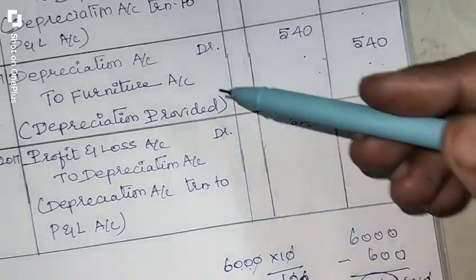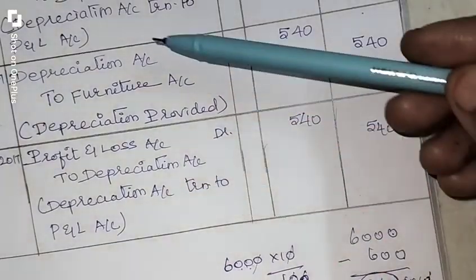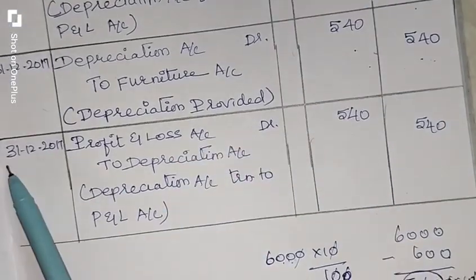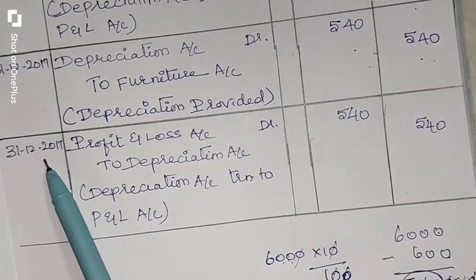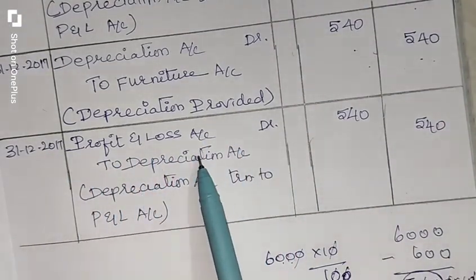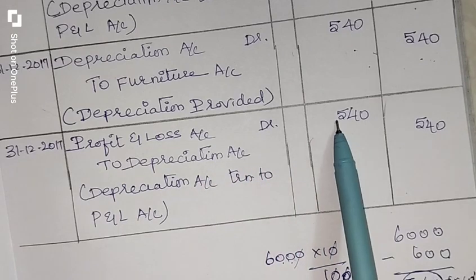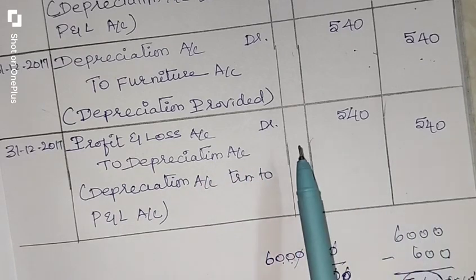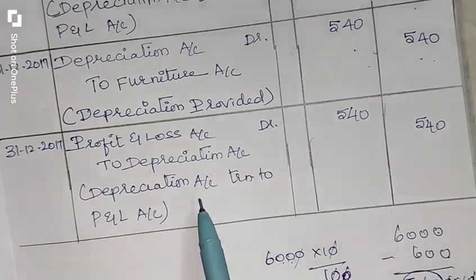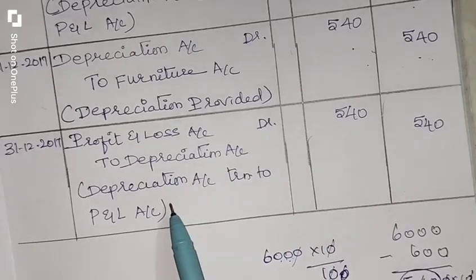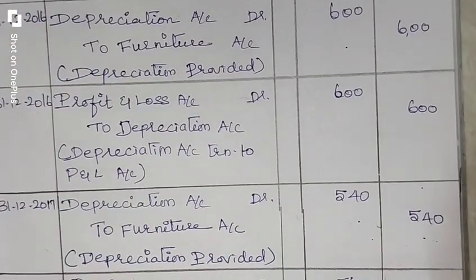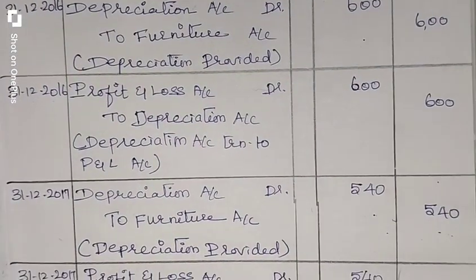Now we have to transfer the depreciation into the Profit and Loss Account on the same date: Profit and Loss Account debit to Depreciation Account, Rs. 540 — the depreciation account is transferred into the Profit and Loss Account. Do you have any doubt? Please comment in the comment box. Thank you. Take care.